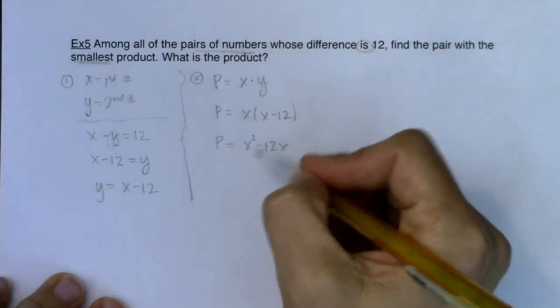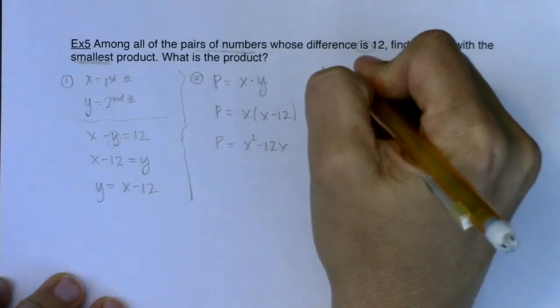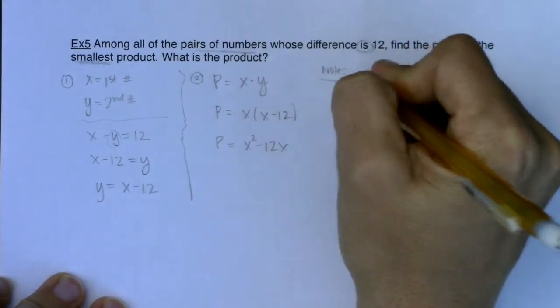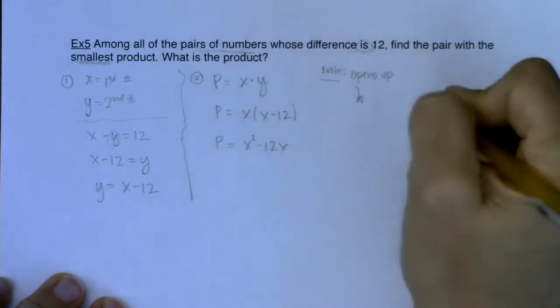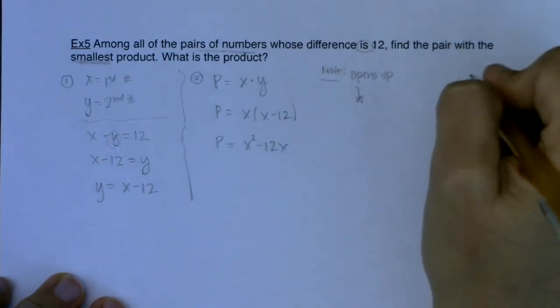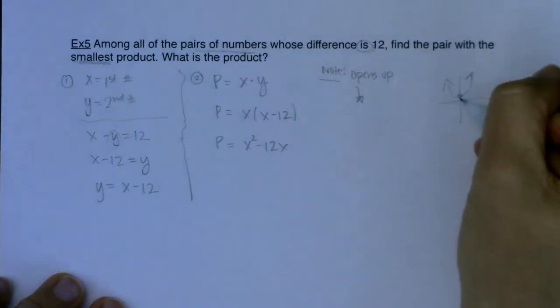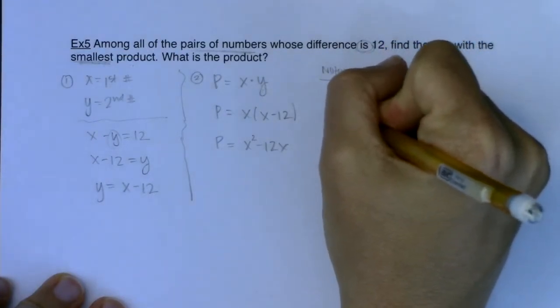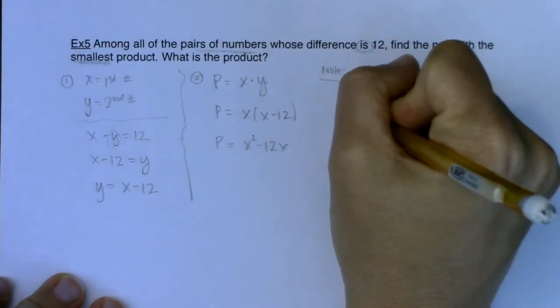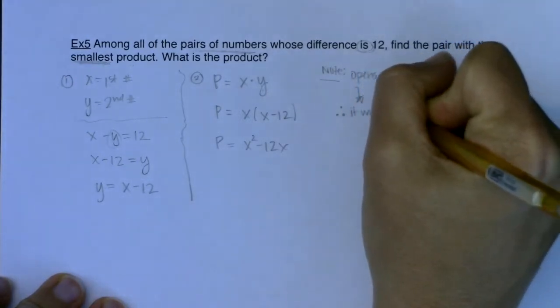And I also, because the lead coefficient is positive, I just want to take note that this parabola opens up. Which means if it opens up, you can imagine if I had an upward facing parabola, I am going to have some kind of minimum at the vertex. So that means this parabola will have a minimum value at the vertex.